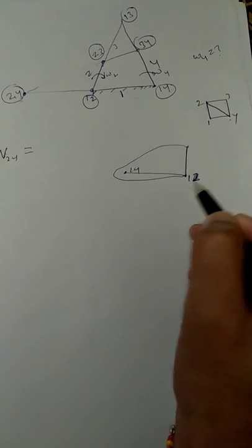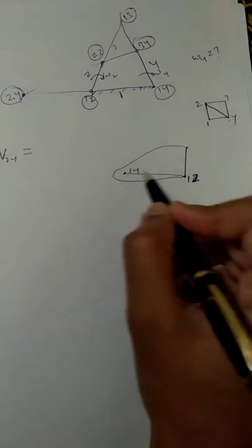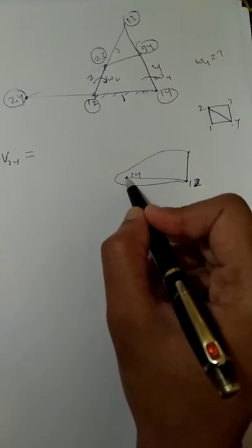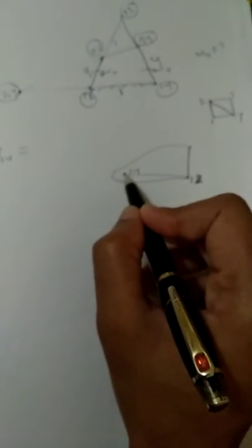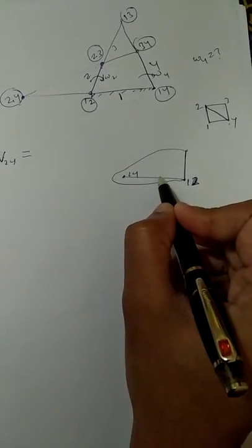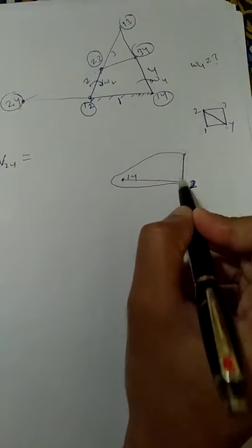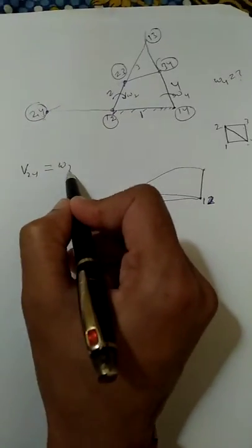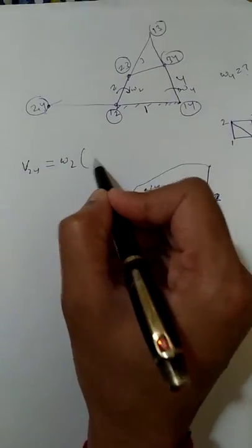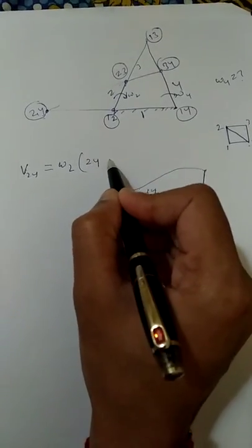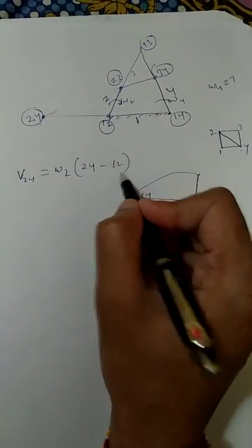So if you want to find the velocity of I24, you just have to multiply the angular velocity by the distance between them. So it is omega 2 times (I24 minus I12). Simple.